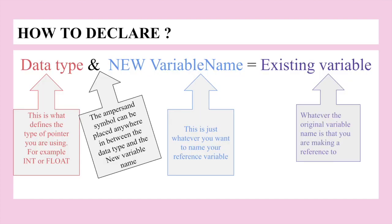We declare it kind of similar to the pointer. We have data type, the ampersand symbol which can also be placed anywhere, in between your new variable name and the existing variable that is referring to. If you want you can pause this and read these.